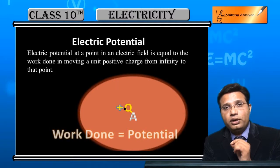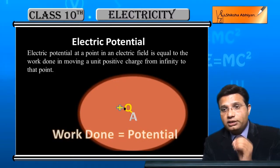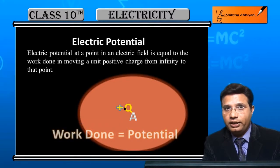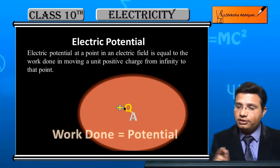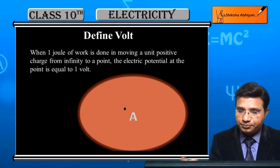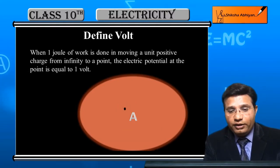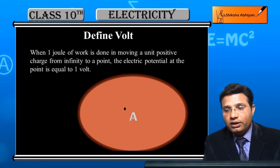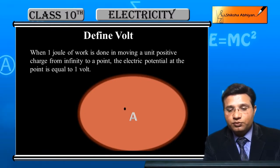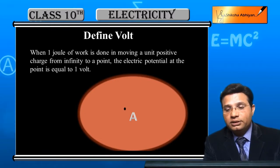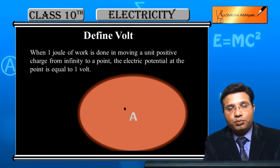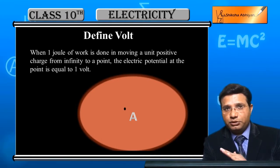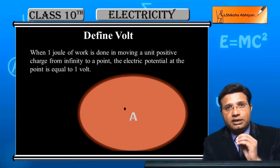V-O-L-T, volt — we say there is that much volt of electric potential at that point. Now what is volt? When 1 joule of work is done in moving a unit positive charge from infinity to a point, the electric potential at that point is equal to 1 volt.